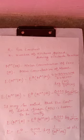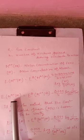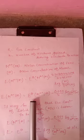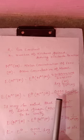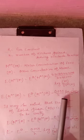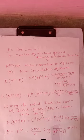Now we put all the value and we can calculate. We will get E(M^n+|M) = E°(M^n+|M) minus 0.059/n log 1/[M^n+]. Now we can calculate and that will be the final equation.